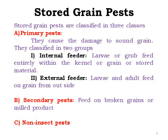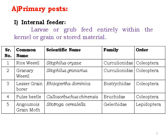The secondary pest feeds on broken grains, meal products, or grain parts — the secondary particles made by the primary pest. Another category is non-insect pests like mites and rats. Primary pest internal feeders include larvae and grubs feeding entirely within the kernel. For example, the common rice weevil, Sitophilus oryzae, Family Curculionidae, Order Coleoptera.